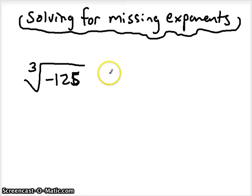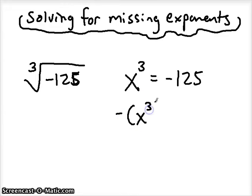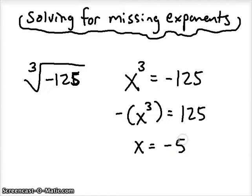In order to solve that, you think in your head what to the third power equals negative 125, or what's the opposite of something to the third power that equals positive 125. Either way, in this case hopefully you know that it's 5 to the third power. And in order to get negative 125, it's negative 5 to the third power.